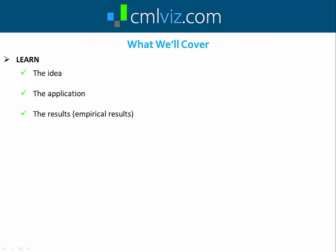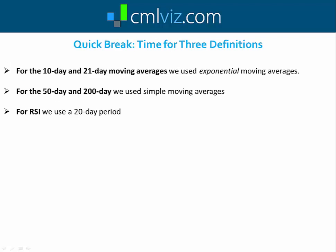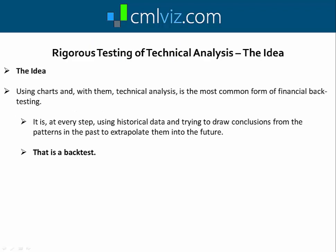Let's take a quick break for three definitions. When we're talking about the 10-day and 21-day moving averages, we are using exponential moving averages. When we're talking about the 50-day and 200-day moving averages, we're talking about simple moving averages. And when we talk about RSI, we use the 20-day period RSI.